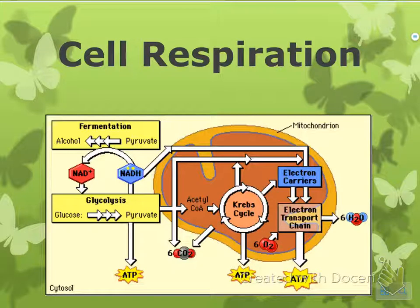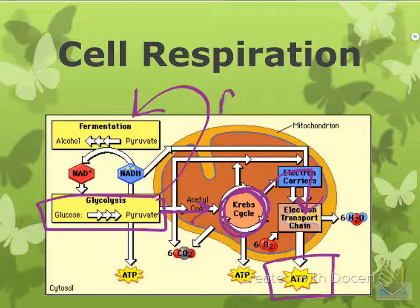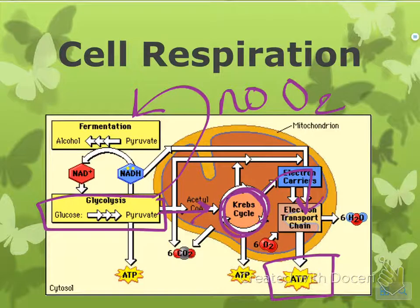So cell respiration — here's your quick review. Remember, we start with glycolysis. If there is oxygen present, we're going to go into the mitochondria, go through the Krebs cycle, and then eventually the electron transport chain. Remember that the electron transport chain produces the most ATP. We only go to fermentation if there's no oxygen present, and that really doesn't produce that much ATP.